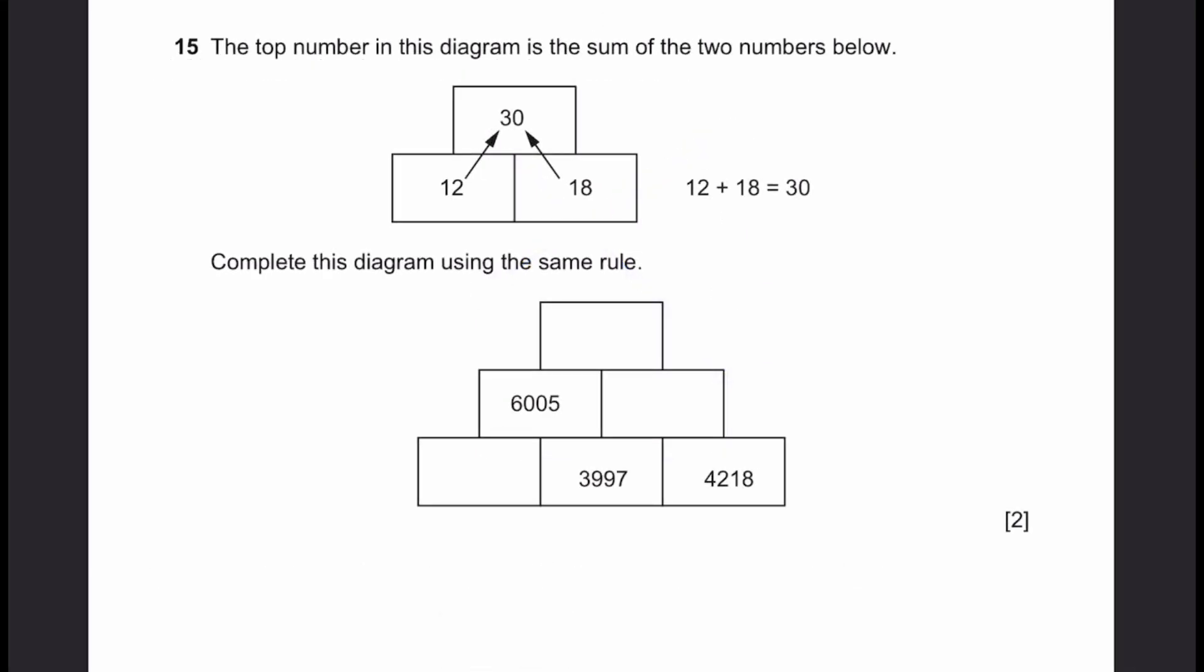Question 15. The top number of the diagram is the sum of the two numbers below. Complete the diagram using the same rule. 2997 plus 4218. Add them, we get 8215. Now we add these two. 6005, 8215. We get 14220. 3997 plus something is 6005. So 6005 minus 3997. That's equal to 2008. That's the answer.